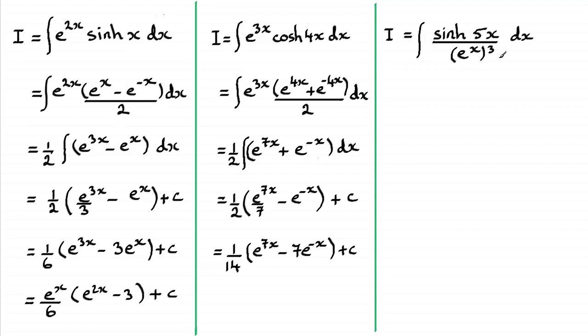Now with this last one, we can easily change this into something very similar to what we have here. Because e to the power x all cubed is the same as e to the power 3x, we can bring that up to the top as e to the power minus 3x, and then use the definition for sinh 5x. That will be this one here, only replacing the x with a 5x. So our integral will take on this shape here.